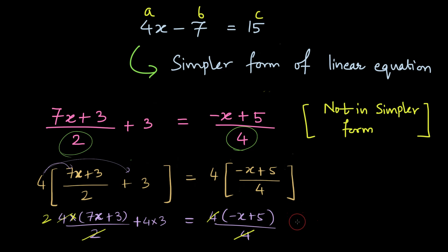So what has happened is that on the left hand side the denominator is not anymore there. 4 times 3 is 12 and on the right hand side I don't have to write 4 in the denominator as well as in the numerator.